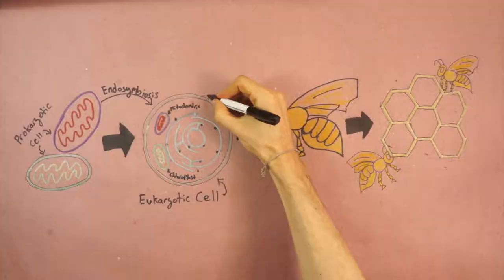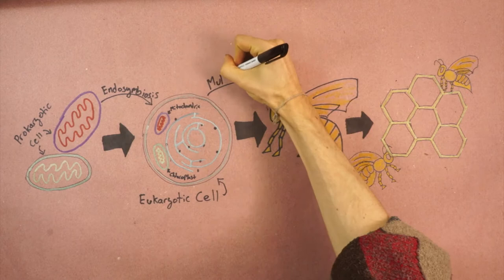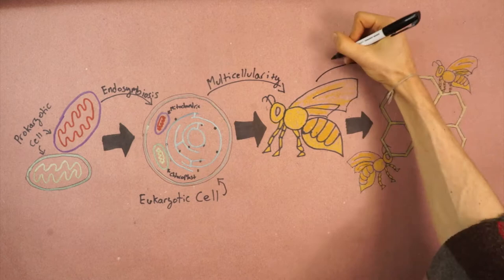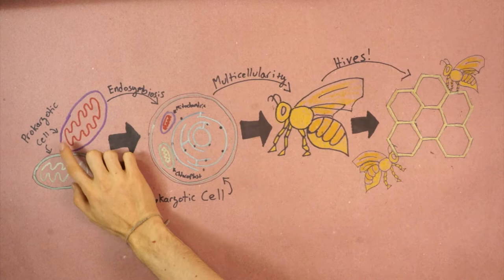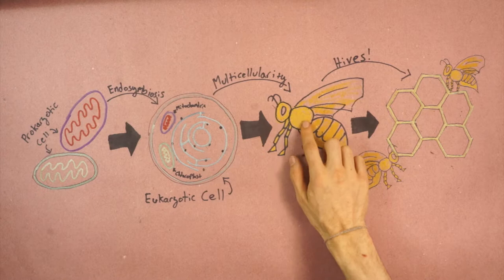Another example is when individual eukaryotic cells started living together so intimately that they became integrated multicellular organisms. And some multicellular organisms, like bees for example, have transitioned again into hives. Prokaryotic cells into the eukaryotic cell, multiple cells into a multicellular organism, multiple multicellular organisms into more complex societies. And each time a major transition has occurred, it's had a radical effect on the space and scale at which life lives.